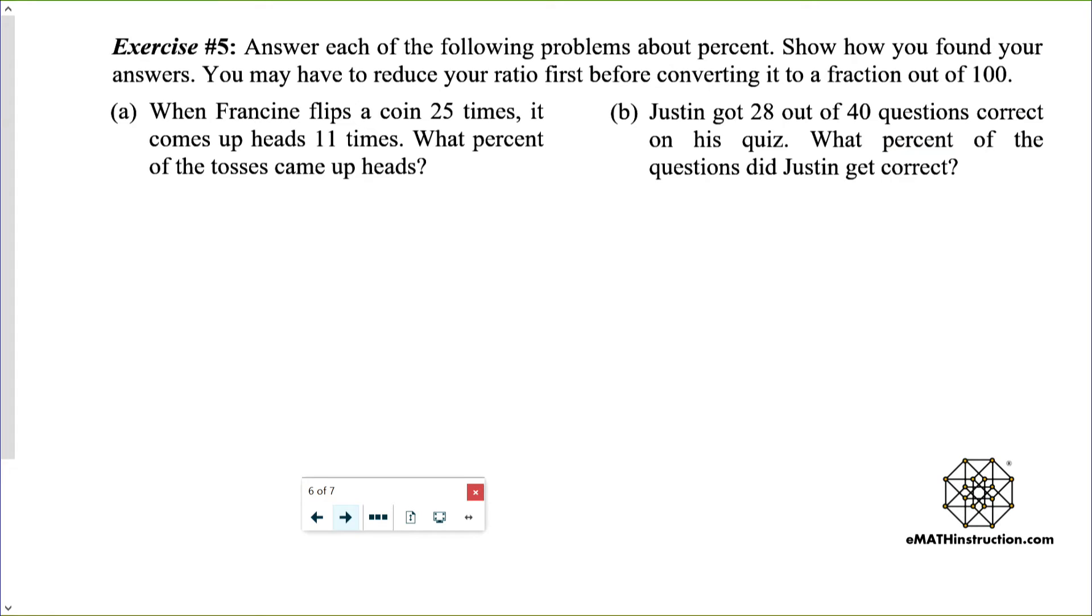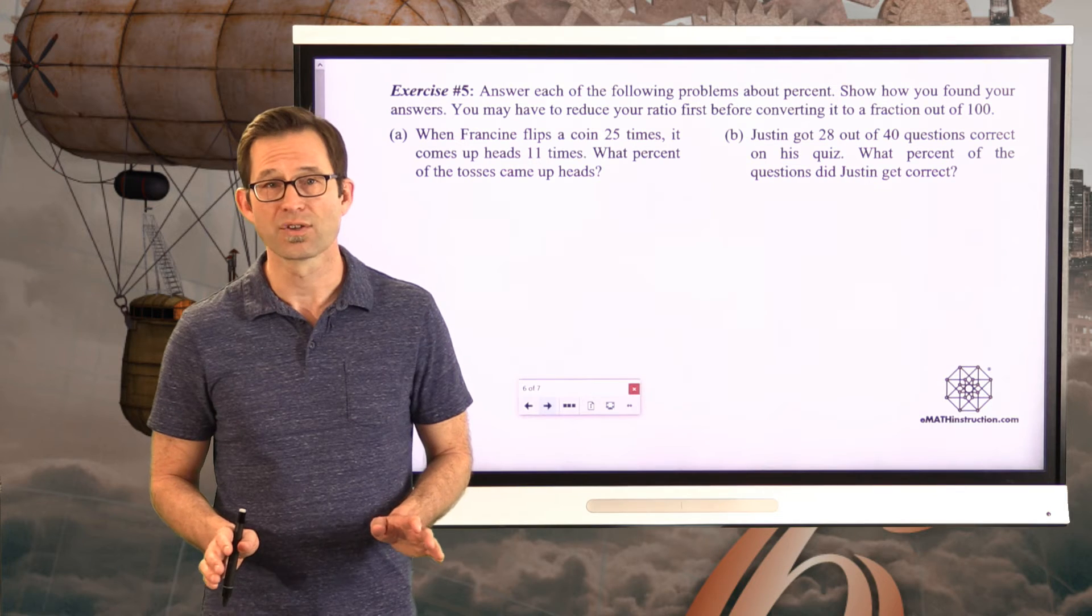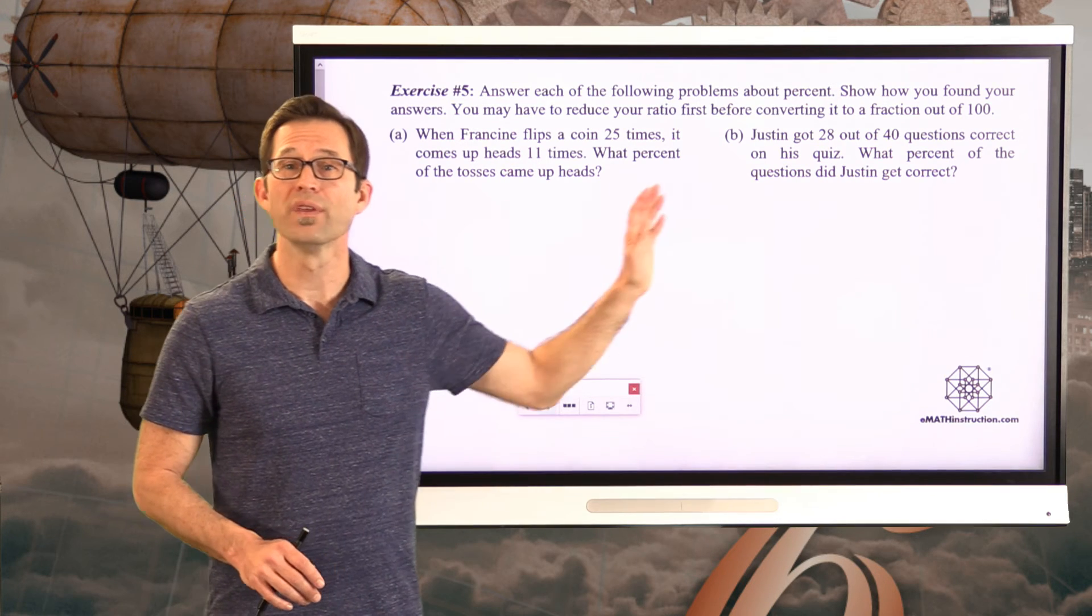And again, coming back to this again and again and again, all we're saying is, all right, 24 out of 32 students own a cell phone. That's 3/4 of the students. If there were 100 students in class where the same fraction owned a cell phone, how many of them would own it? 75 would. So 75/100 is the same as 3/4, which is the same as 24/32. All right, let's keep going. Exercise number five. Answer each of the following problems about percent. Show how you found your answers. You may have to reduce your ratio first before converting it to a fraction out of 100.